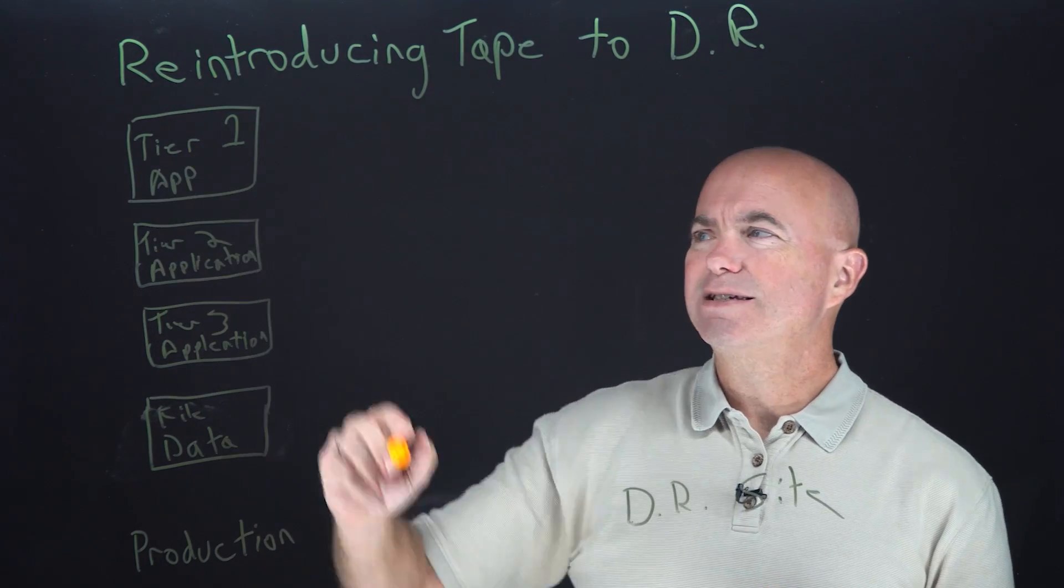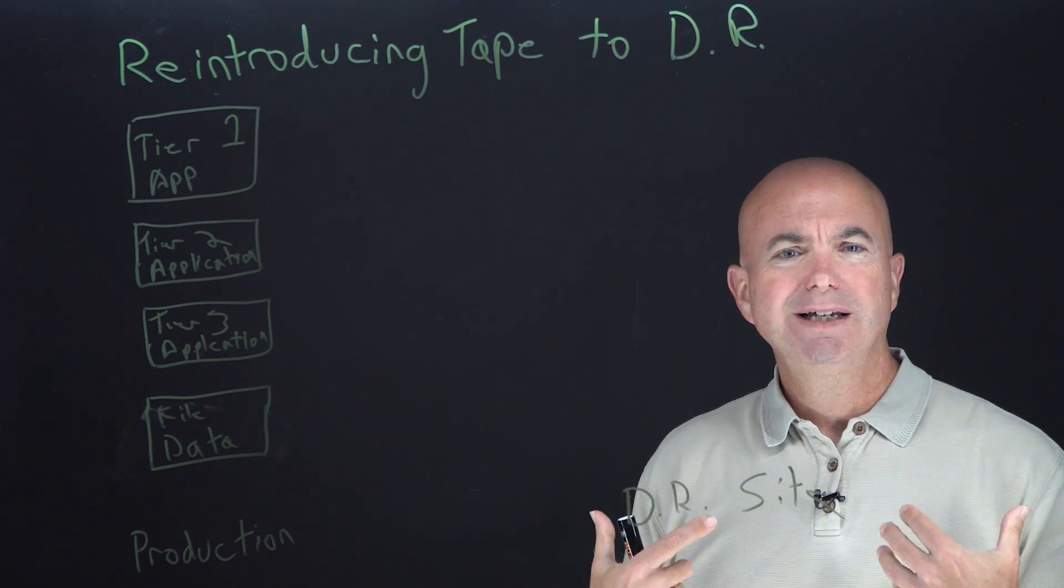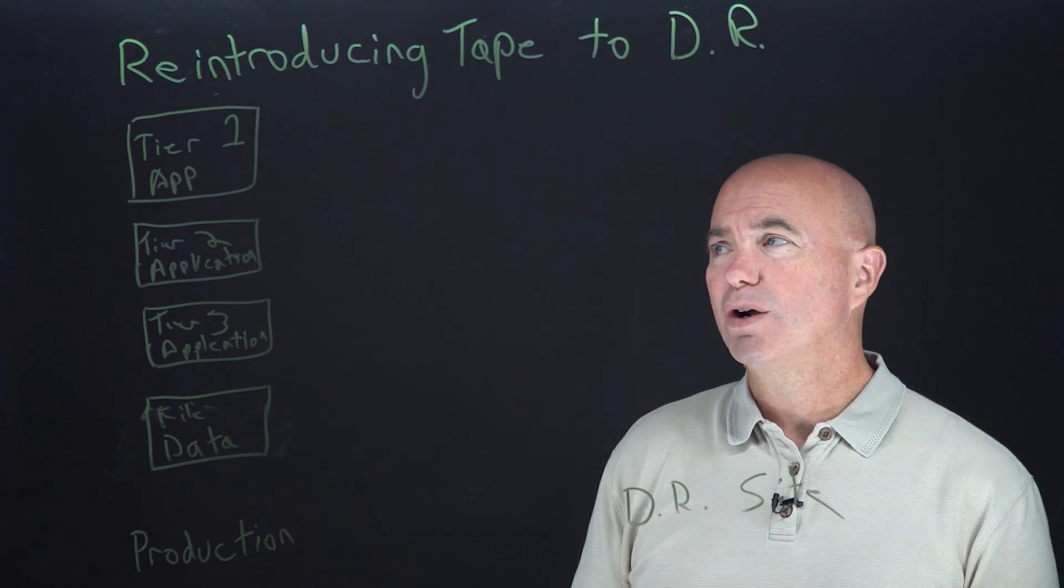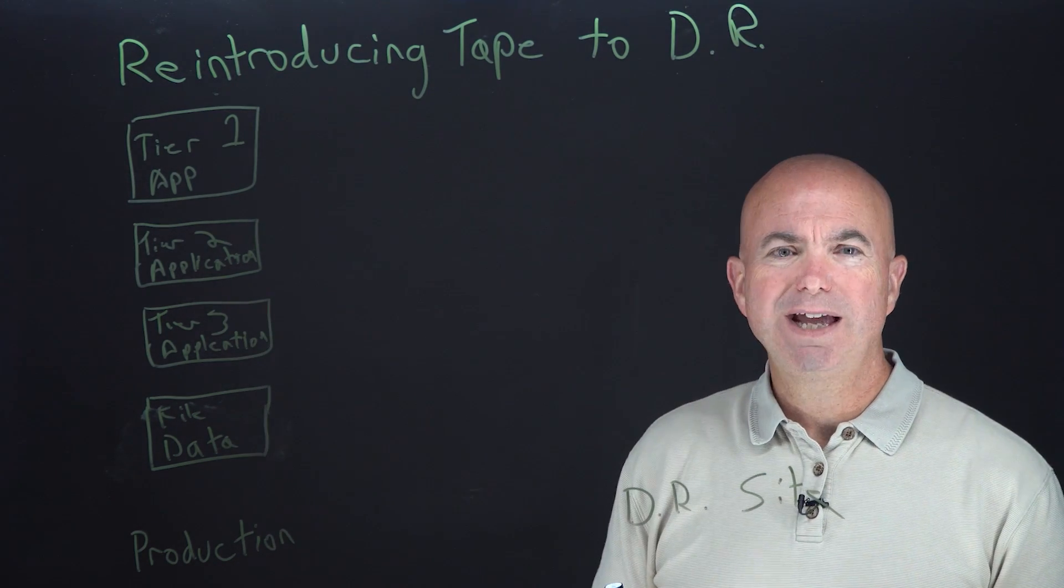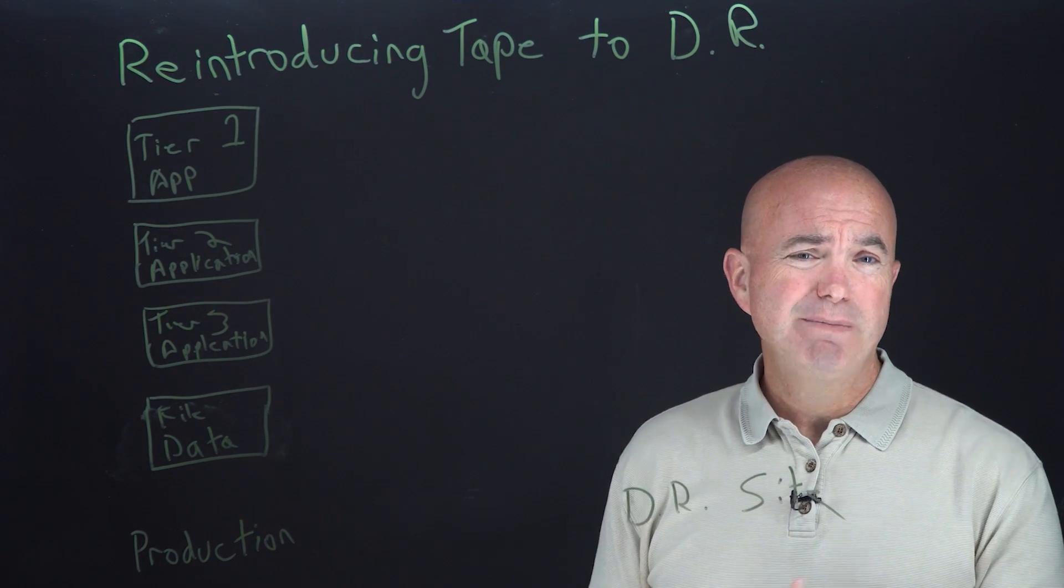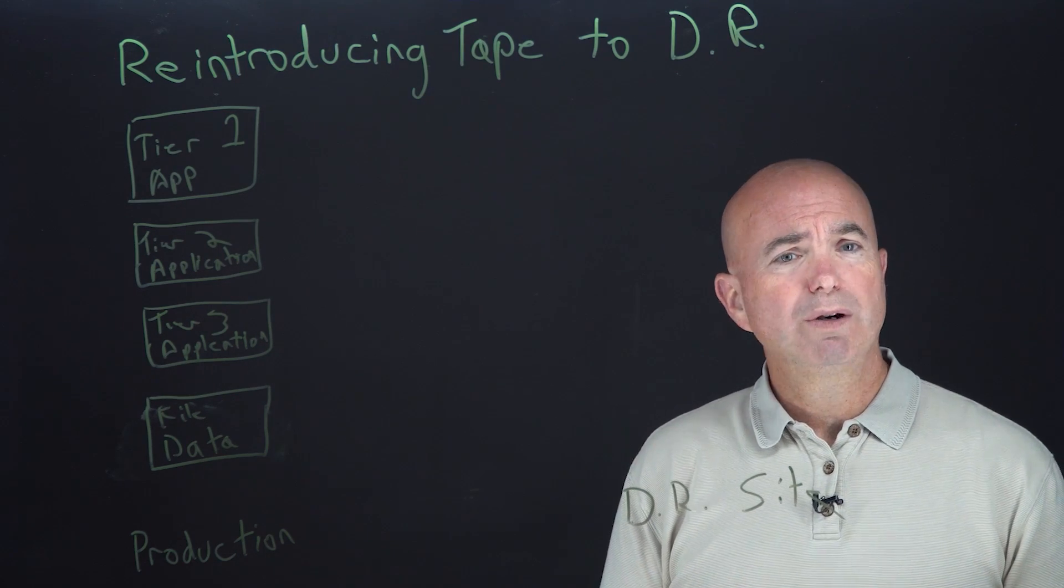So I have drawn up here several classes of applications: a tier one app, mission critical, got to be up and running. If there's a disaster, even in the DR site, I got to be up very quickly. A tier two application, important to the business. If there is a disaster, I've got to be up and running at the DR site within a few hours, so it's still pretty critical.